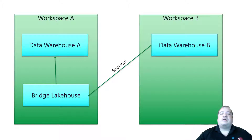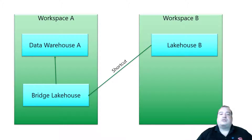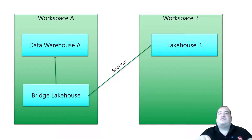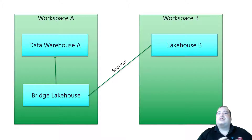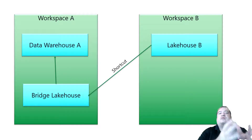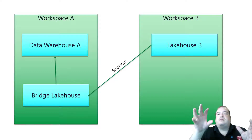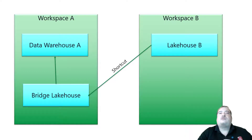Data warehouse A can access the bridge lake house. What if the other object in Workspace B is a lake house? The work is absolutely the same — there is no difference. The only detail is: if lake house B wants to access data warehouse A, lake house B can make a shortcut directly to data warehouse A with no restriction. It's only the data warehouse that doesn't support shortcuts; for a data warehouse to access a lake house in a different workspace, a lake house bridge is needed.